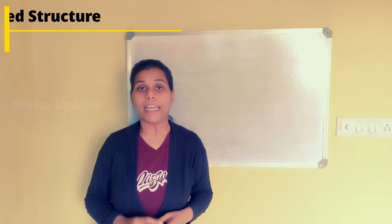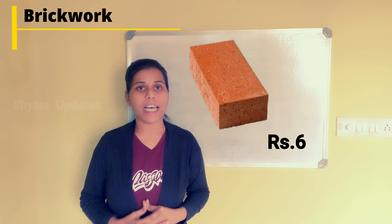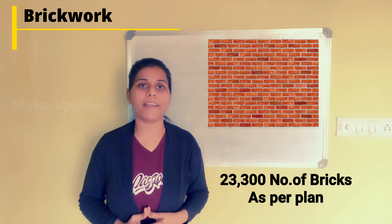Next is brick work. To calculate the cost, we need the number of bricks: volume of brick masonry divided by volume of one brick gives the number of bricks. The current rate of one brick is Rs. 6. As per plan, there are 23,300 bricks. Multiplying cost per brick by number of bricks gives total brick cost of Rs. 1,40,000. Next is plastering work, which includes both interior and exterior plastering. The cost is between Rs. 80,000 to Rs. 90,000. Note: labour cost has not been included yet — it will be stated separately.